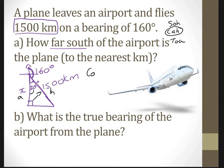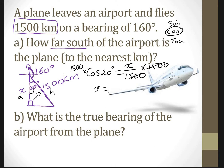So now we just use cosine. Cos of 20 degrees is equal to the adjacent, which is x in this case, over the hypotenuse, which is 1500. Now I just get rid of 1500 by multiplying both sides by 1500. That cancels out, so x is equal to 1500 cos of 20 degrees. Now if you put that in your calculator, you should get 1409.54...